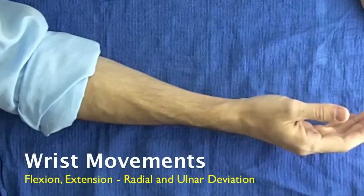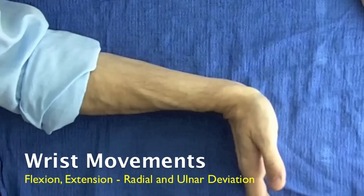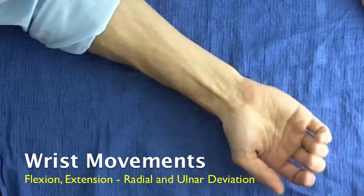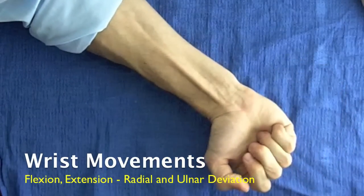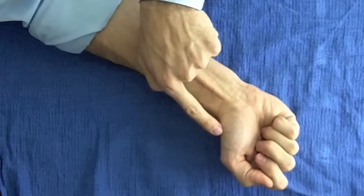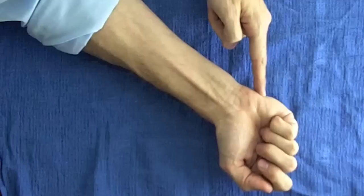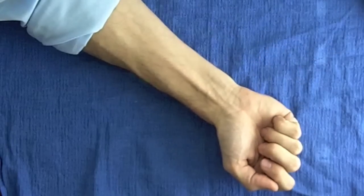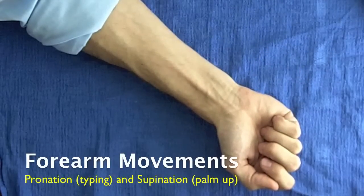Wrist movements: the wrist joint flexes and extends but also radially and ulnarly deviates or moves from side to side. Radially just means toward the thumb side, ulnarly means toward the pinky side.